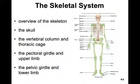We're going to be learning a lot of different features on the bones, not only the names of the bones. These features are really important because they act as sites for muscle attachments. They'll help you understand how the muscles attach and have their actions on each of the joints when we get to that chapter.